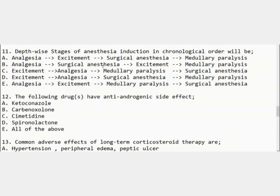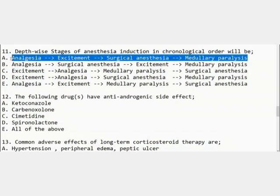Our first MCQ is: the stages of anesthesia induction in chronological order. We are asked about the stages in which anesthesia is induced and certain effects are observed in the patient. The options include: analgesia, excitement, surgical anesthesia, then medullary paralysis. If you have studied it, you will know that option A is the correct option — this represents the correct order in which anesthesia effects are observed in our body.